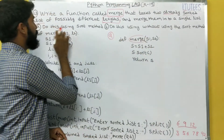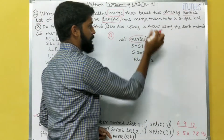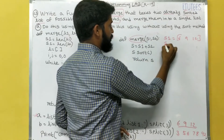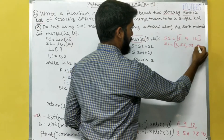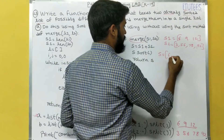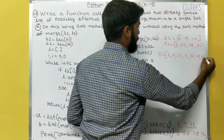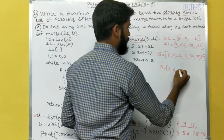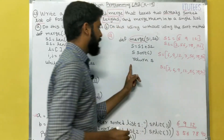First, method A: using the sort method. DEF merge(S1, S2) — S1 equals 6, 9, 12 and S2 equals 3, 56, 78, 92. Now S equals S1 plus S2, giving S = 6, 9, 12, 3, 56, 78, 92. Then we call S.sort(), so now S becomes 3, 6, 9, 12, 56, 78, 92. Then we return S.